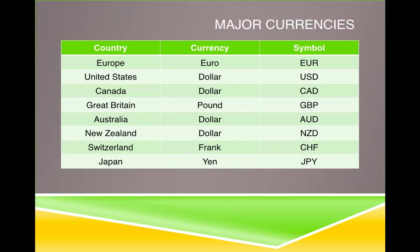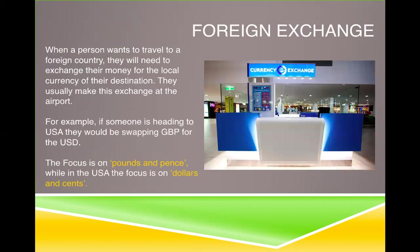Here are a few currencies and their symbols. The symbol on the right represents the currency used in their country. The euro is EUR, the dollar is USD, the Canadian dollar is CAD. The only one that doesn't really follow the letters is Switzerland, which is CHF — it's got franc in it. AUD is Australian, JPY is Japanese — you can understand all of that.